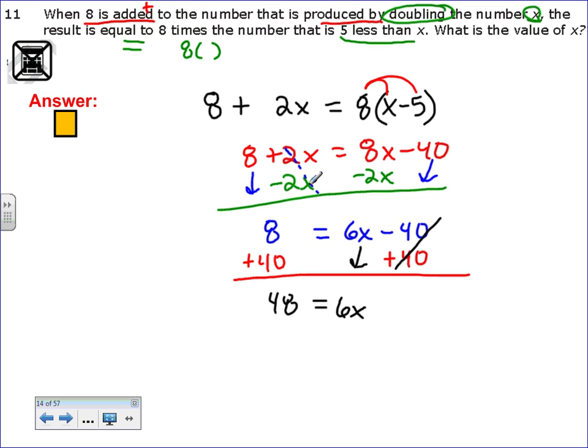This becomes 48 equals 6x. x is being multiplied by 6, so I'm going to divide both sides by 6. And x equals 8. That's what the question asks. What is the value of x? x equals 8.